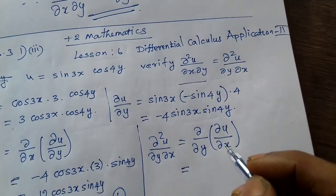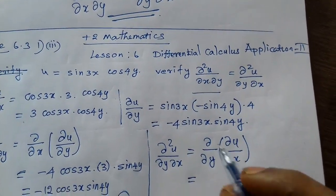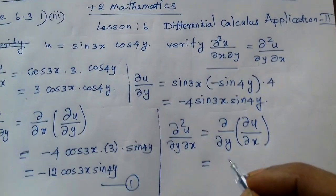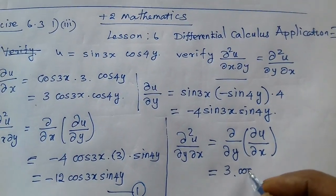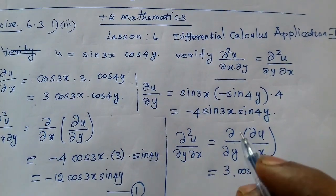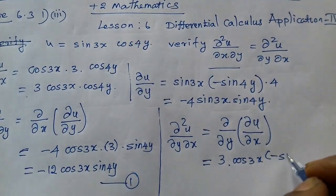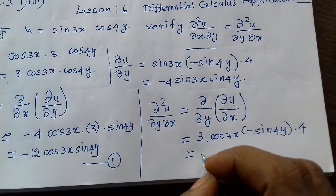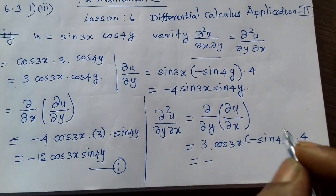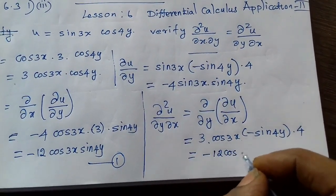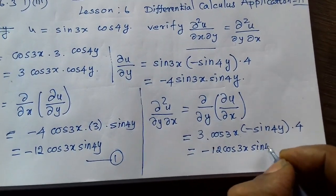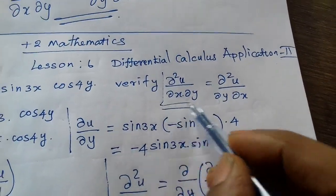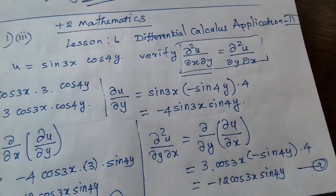Now find ∂/∂y of (∂u/∂x). ∂u/∂x = 3cos3x · cos4y. cos3x is constant. Differentiate cos4y: minus sin4y, multiply by 4. Simplify: result is -4cos3x · sin4y. This is Equation 2. Equations 1 and 2 are equal, so the condition is satisfied and the problem is verified.